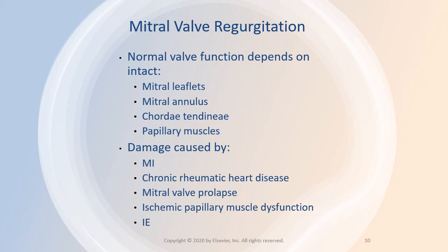In secondary, also called functional mitral regurgitation, myocardial disease causes the regurgitation. Most cases of mitral regurgitation are caused by MI, chronic rheumatic heart disease, mitral valve prolapse, ischemic papillary muscle dysfunction, and infective endocarditis.